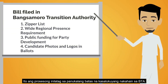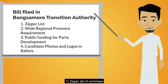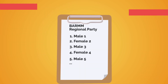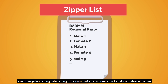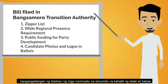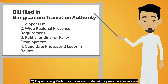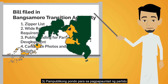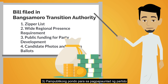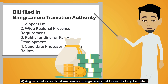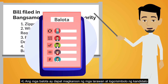This is the process laid out in the bill currently filed in the BTA. Other parts of the bill provide: 1. Zipper List of Nominees — this requires the list of nominees submitted to alternate between male and female; 2. Requiring parties to have a wide regional presence; 3. Public funding for party development; 4. Requiring ballots to have candidate photos and logos.